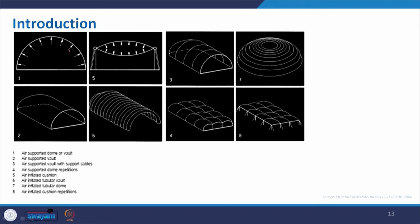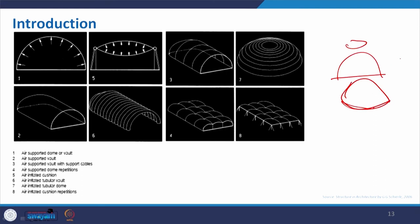Let us check how correct you are — most of you should be 100 percent correct. Number 1 is an air-supported dome and vault, because it is a single layer filled with air. Number 2 is also air-supported — it is a vault structure with a single layer. We should understand why, not just believe the text: in both cases it is a single membrane with air inside.